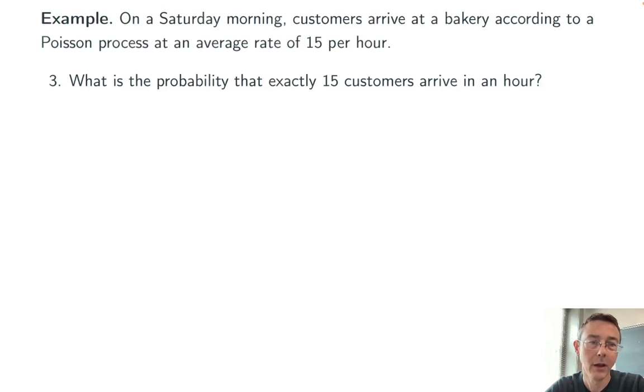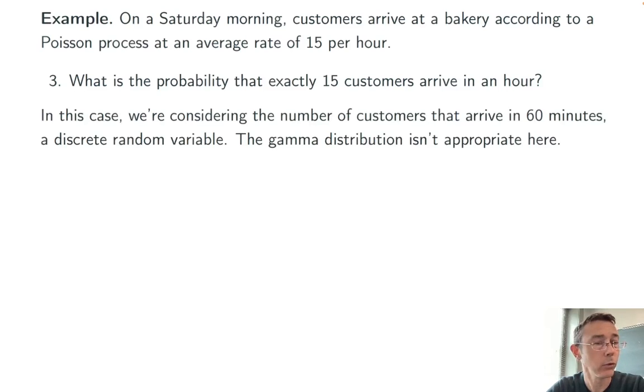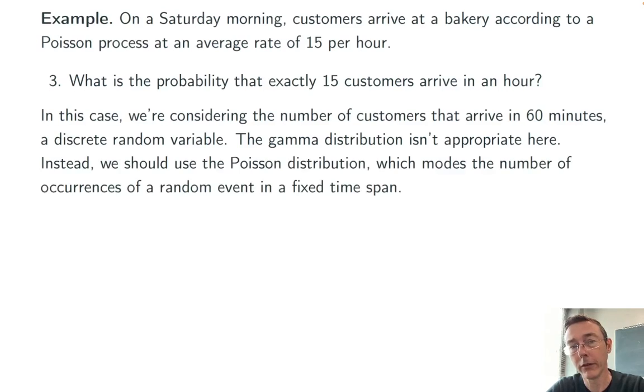Problem three, what's the probability that exactly 15 customers arrive in one hour? Now in this case, we're talking about the number of customers that arrive in a fixed amount of time. So the random variable here is actually the number of occurrences, not the waiting time. So the gamma distribution is not the best way to go about this problem. Instead, we should use the Poisson distribution directly.